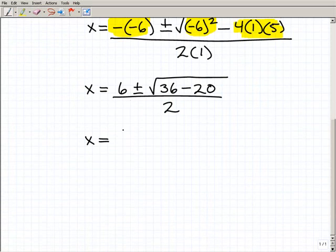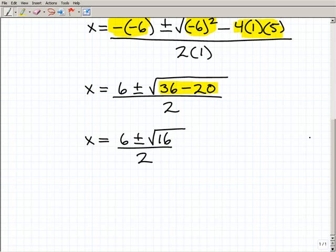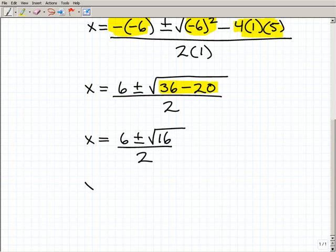So let's move on. So I have 6 plus or minus the square root of 36 minus 20. And 36 minus 20 is, in fact, 16, all over 2. So we're almost there. So x equals 6 plus or minus the square root of 16. So that's going to be 6 plus or minus the square root of 16 is 4 over 2.